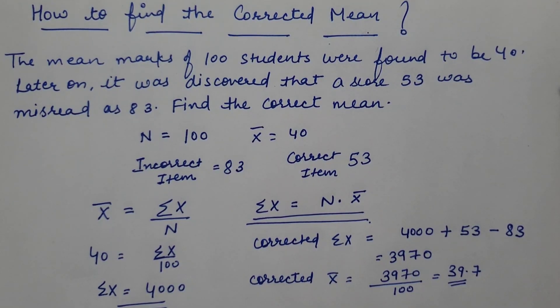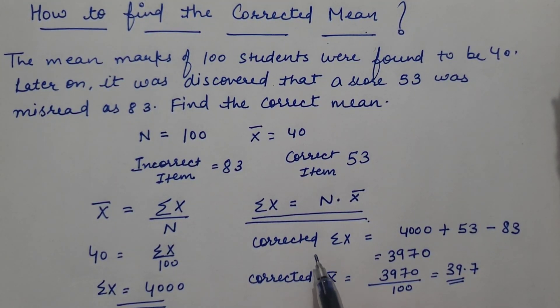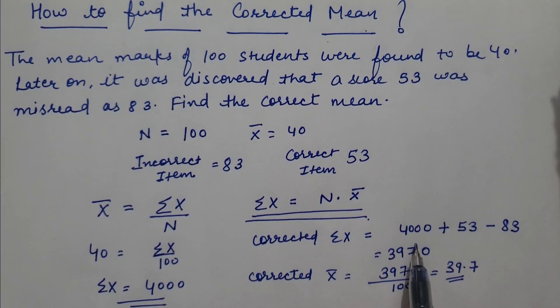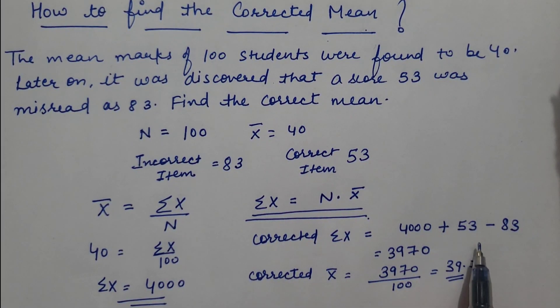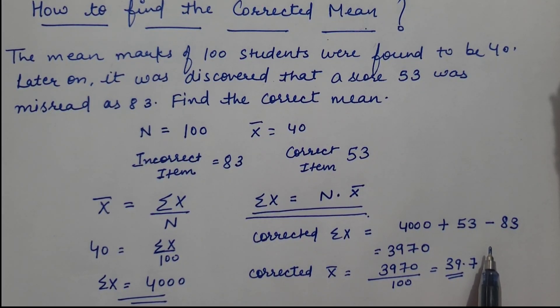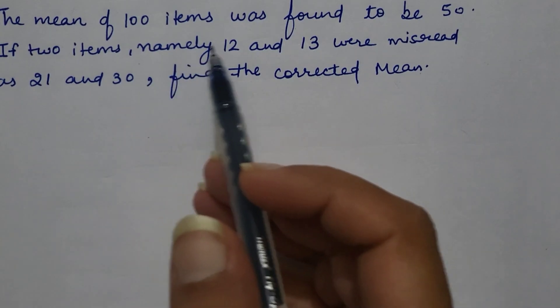In order to find corrected mean, first of all calculate sigma x, then add the correct item and subtract the incorrect item. You will find corrected mean. Let's take another example.